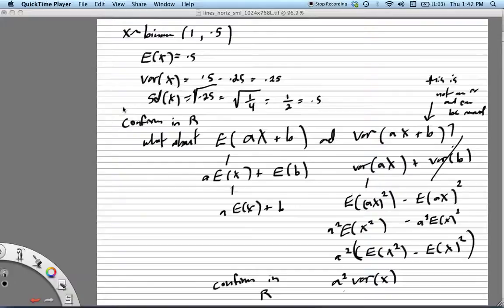So we're looking at the expected value of a linear transformation of a random variable. What's the theoretical expected value and variance of that, and can we see that in action in R?